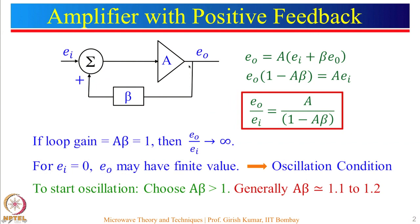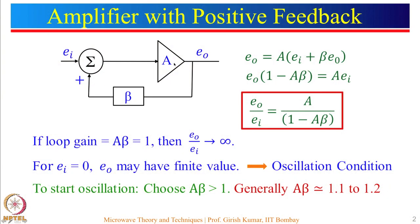Let us first look at the oscillation conditions. We will start with an amplifier with positive feedback. We have an amplifier with gain equal to A, and part of the output is fed back to the input side. There is an input signal shown here only for derivation purposes — in reality, for an oscillator we do not require this input signal. We can write E_0 as A multiplied by the input, where the input equals E_i plus beta times E_0. So E_0 equals A times (E_i + beta·E_0), which simplifies to E_0 times (1 − A·beta) equals A times E_i.